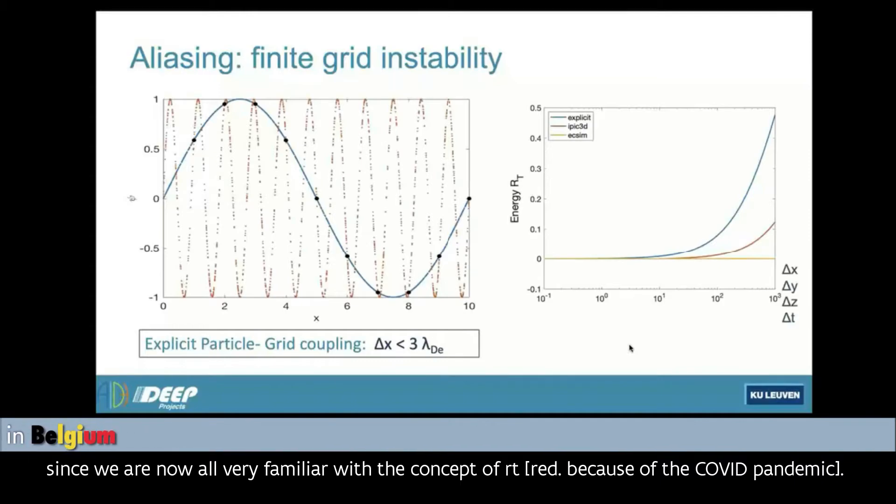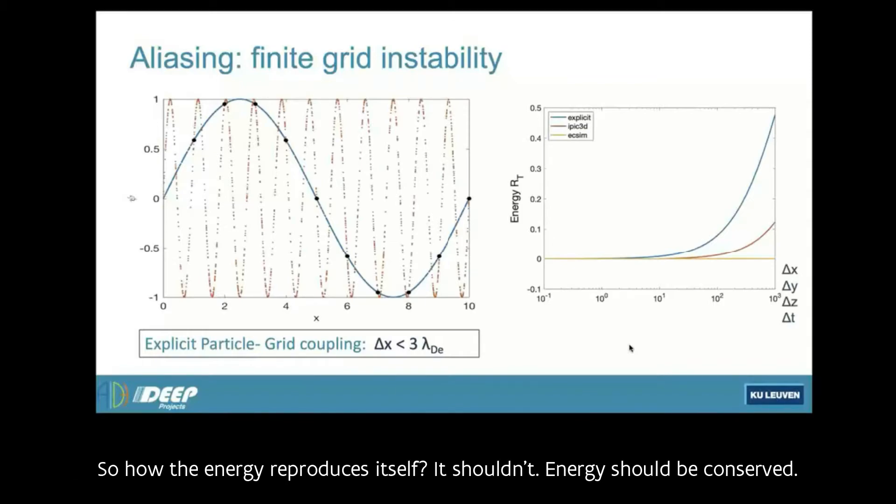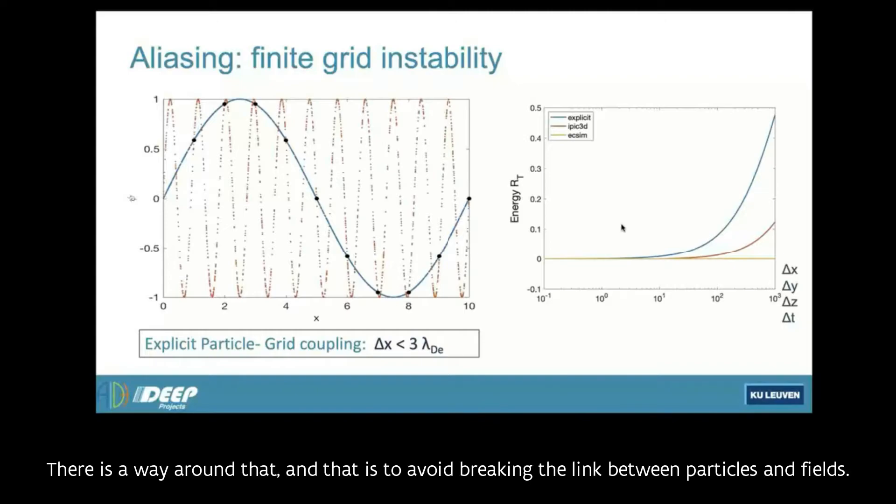I use the reproduction index, R_t, since we are now all very familiar with the concept of R_t. So how the energy reproduces itself, it shouldn't. Energy should be conserved. But instead, because of this numerical trick of breaking the link with the electromagnetic field and particles, energy is actually increasing itself. It's exponentially growing if you don't resolve this case. When you under-resolve it at some point, this takes off and the reproduction index is from zero, it starts to become positive. And you must avoid that because the system will grow in energy without any real source for it. So it goes crazy.